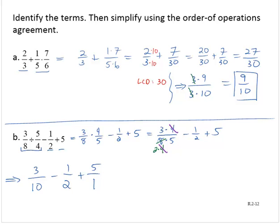Now I have three fractions, and I need to add them. So I need to find the least common denominator for 10, 2, and 1. The LCD is 10.